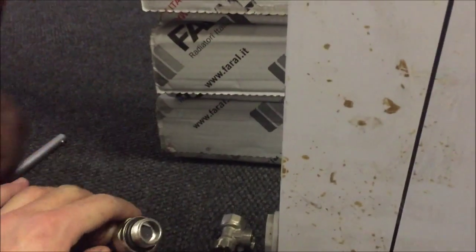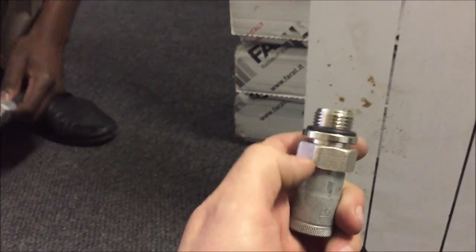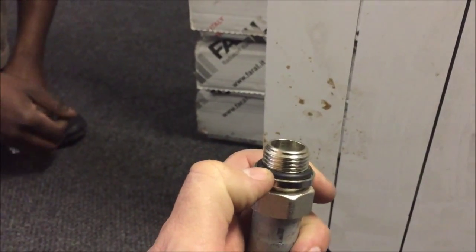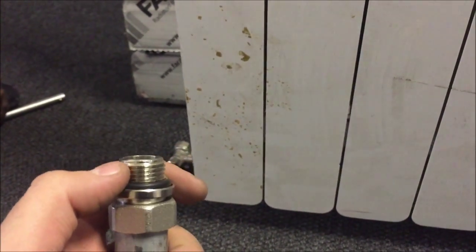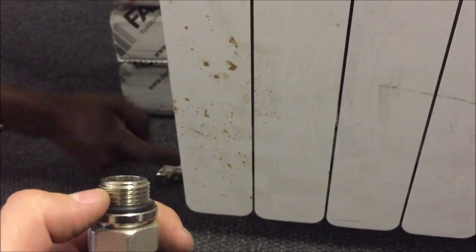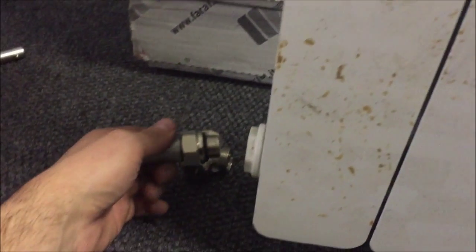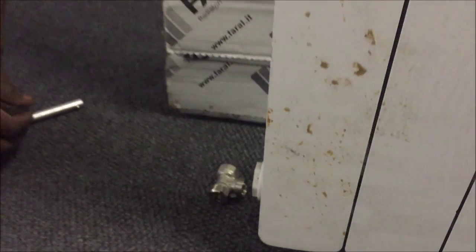Normally the reason why it's leaking is because this rubber seal is not sealing properly here. It's normally due to the radiator, so what I do is I apply hemp on this thread, re-apply it, and then re-tighten everything.